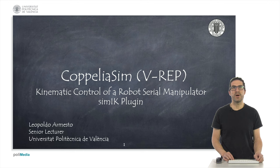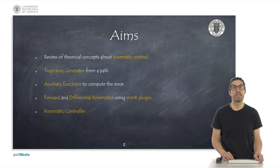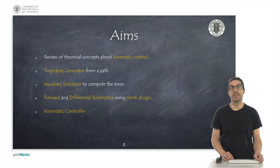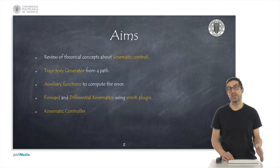Hello. In this video I am going to explain how to implement a kinematic control to follow trajectories using a serial robot manipulator in CoppeliaSIM and the SIMIK plugin. The aims of this presentation are the implementation of a kinematic controller so that the end effector of the robot follows a given trajectory. To do this, we first review some theoretical concepts associated with the robot kinematic control.